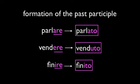The formation of the past participle — as a review, these are the regulars. If you have an ARE verb, it becomes ATO, so PARLARE becomes PARLATO. ERE becomes UTO — VENDERE becomes VENDUTO. FINIRE becomes FINITO. So you want to say 'I spoke' — HO PARLATO; 'I sold' — HO VENDUTO; or 'I finished' — HO FINITO.